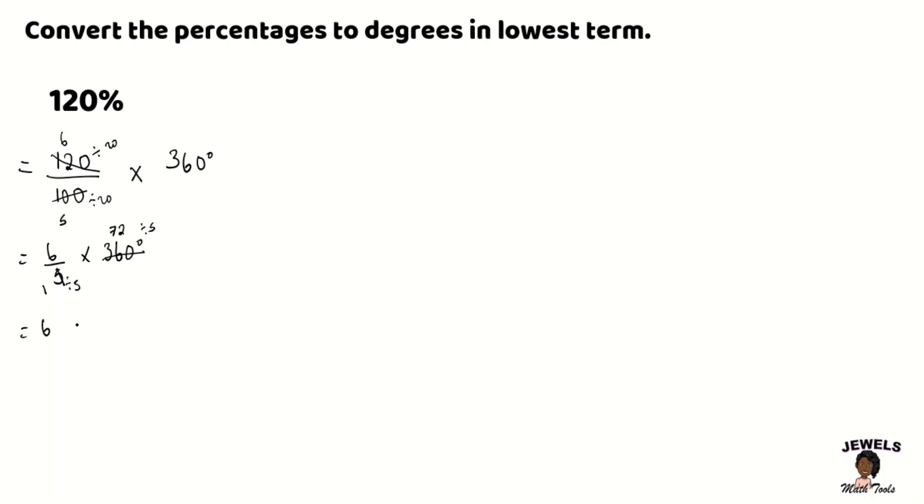So we now have 6 being multiplied to 72 degrees, and 72 degrees multiplied by 6. 6 times 2 is 12. 6 times 7 is 42 plus 1 will give us 43.